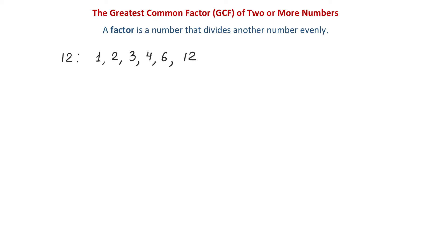This means that we can divide 12 by any of these numbers. Now, let's write all the factors of 18. These are 1, 2, 3, 6, 9, and 18.